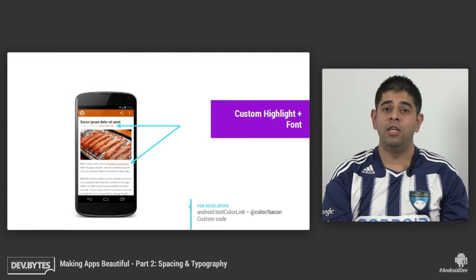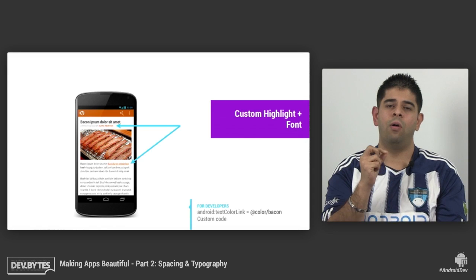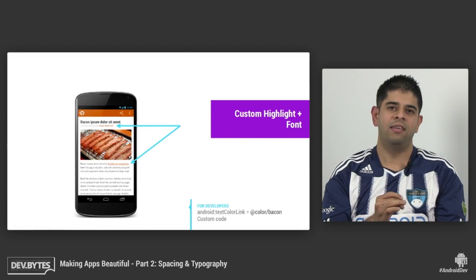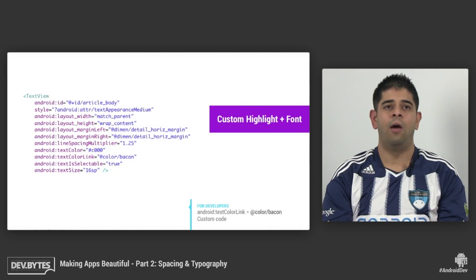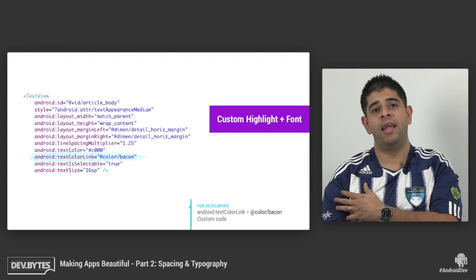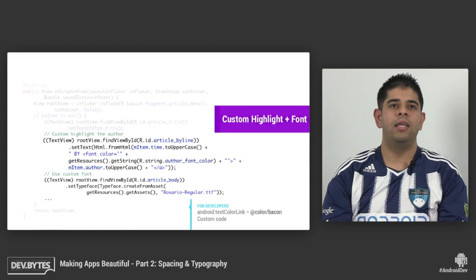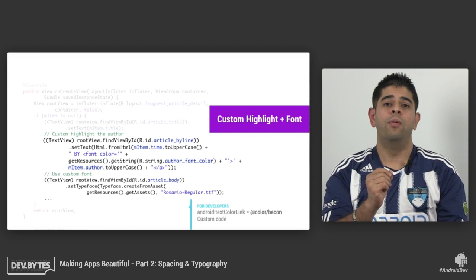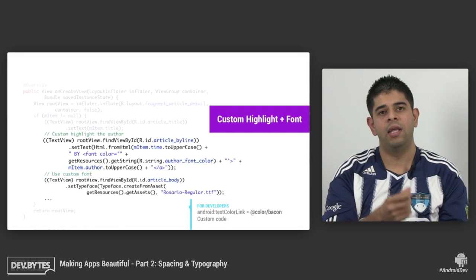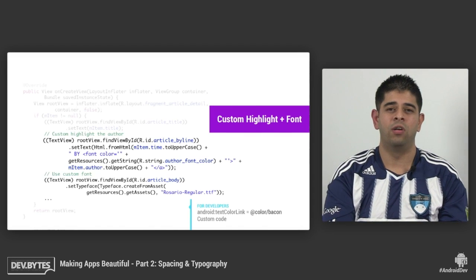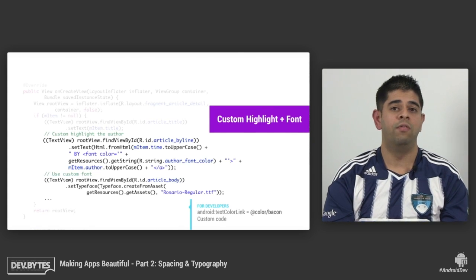Looking at the detail page, we also want to make the author stand out more. We're going to use the text color link property on the text view — we've used a beacon color — so your links will stand out. We also need to make that author subtitle a link. We're doing that programmatically in onCreate view, where we fetch the font color and put some HTML on either side of the author text to specify the font color. For the article body, we're also using a custom font that we've shipped with our APK.